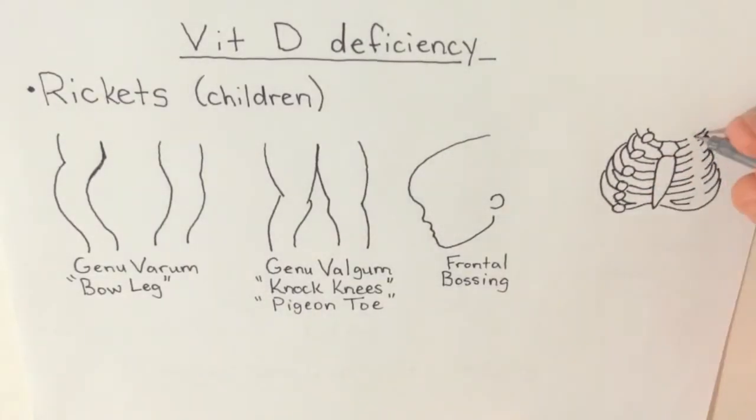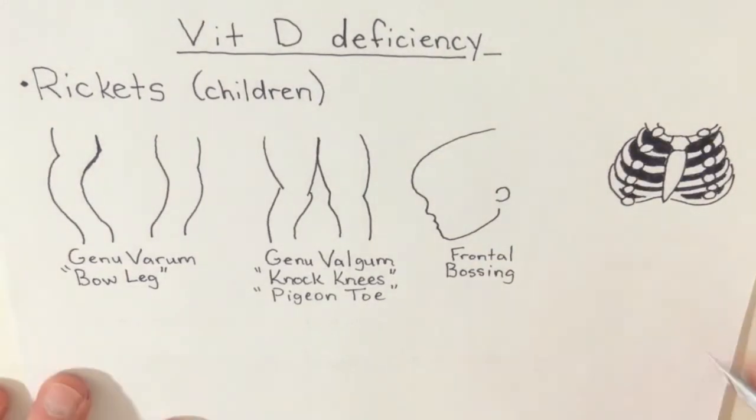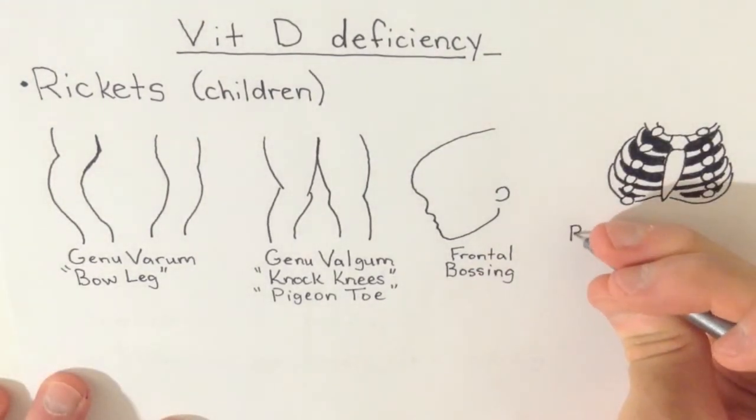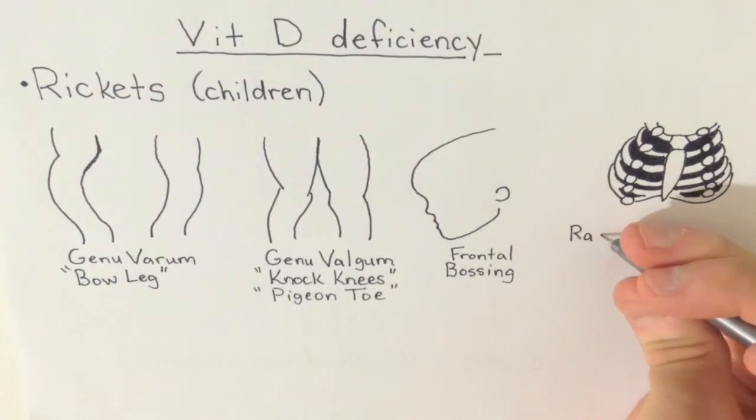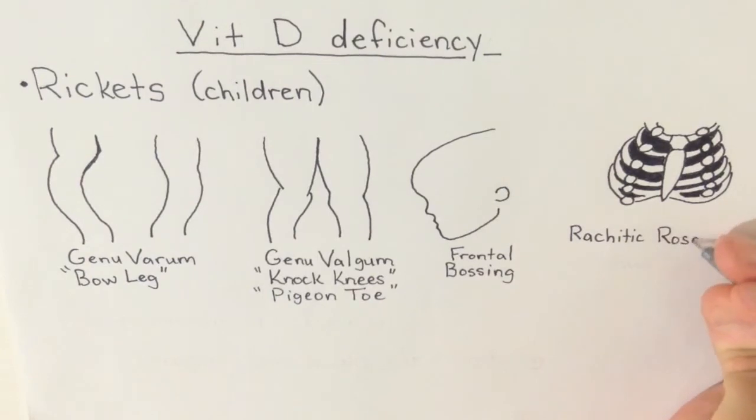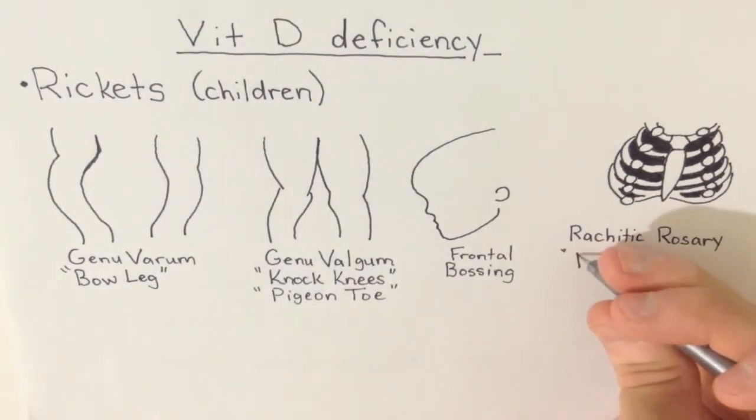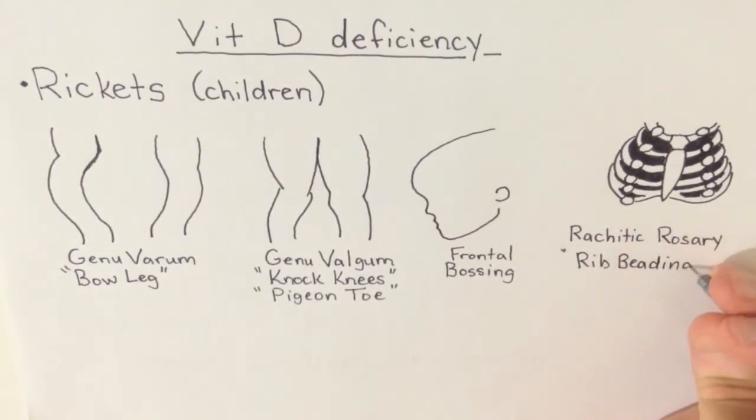Luckily, these symptoms are all reversible with supplementation of calcium and vitamin D. Isn't it weird that these bones of the children bend? Why don't they just break? Well, although these bones are lacking calcium and phosphate, they still contain high amounts of our organic portion of bone, the collagen, which is the main component of our bone's periosteum.